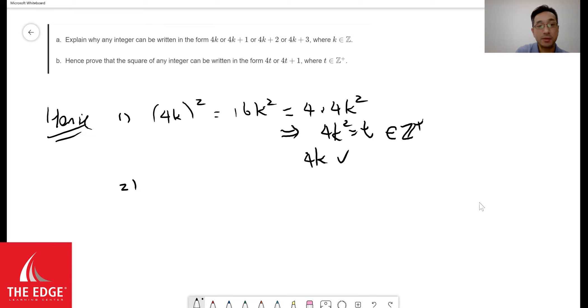However, there's only one out of four cases. So guess what we need to do next? We're going to do the same thing. 4k plus 1 squared, which when expanded will give us 16k squared plus 8k plus 1.